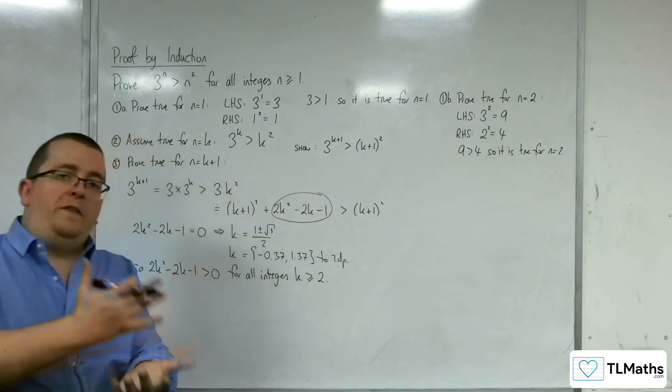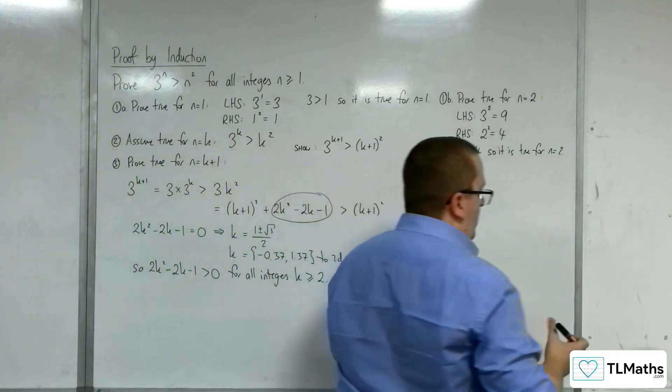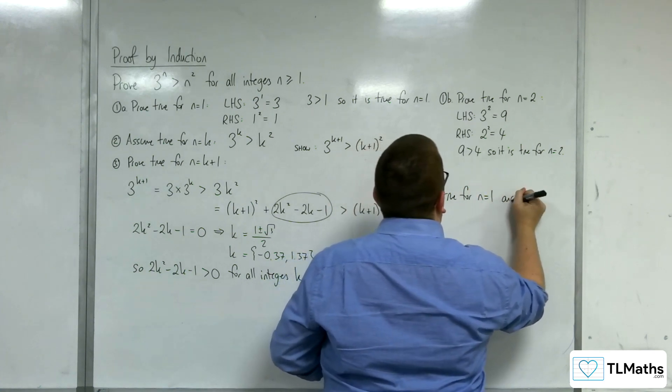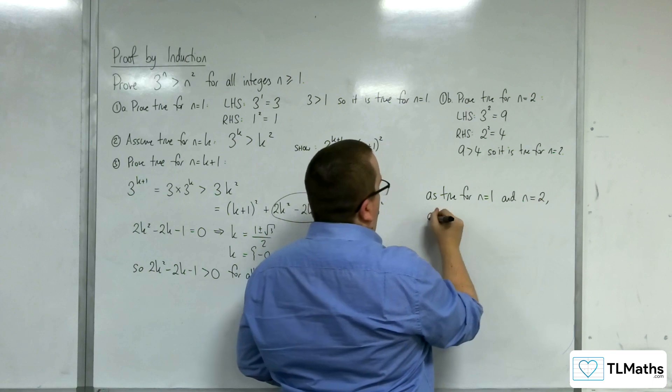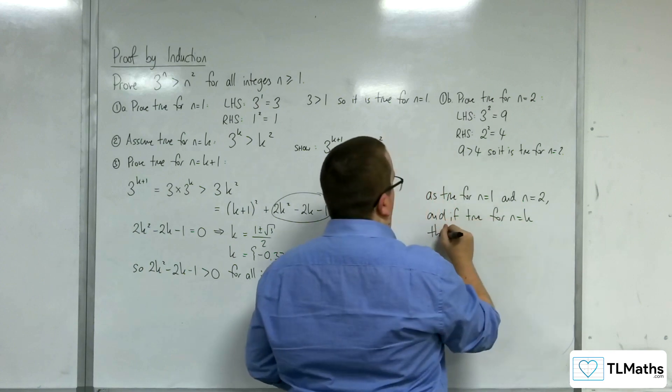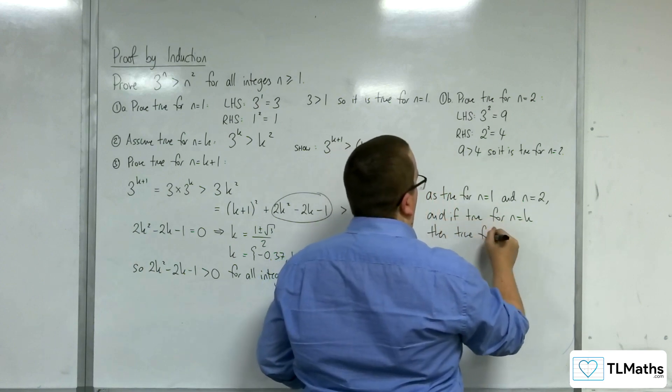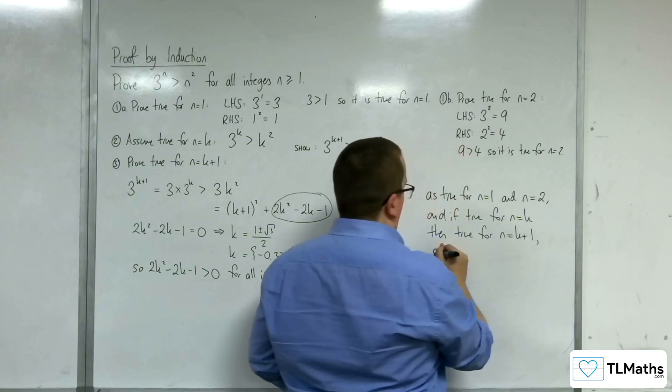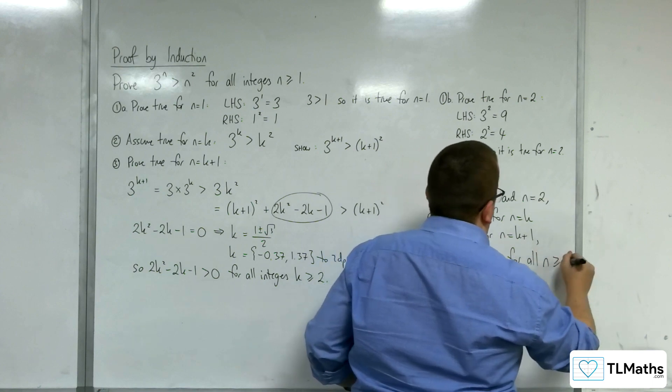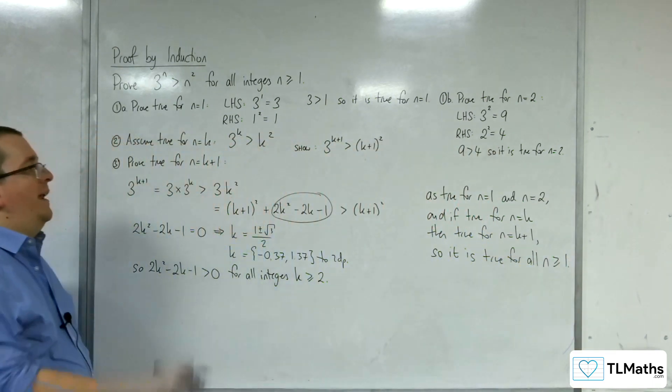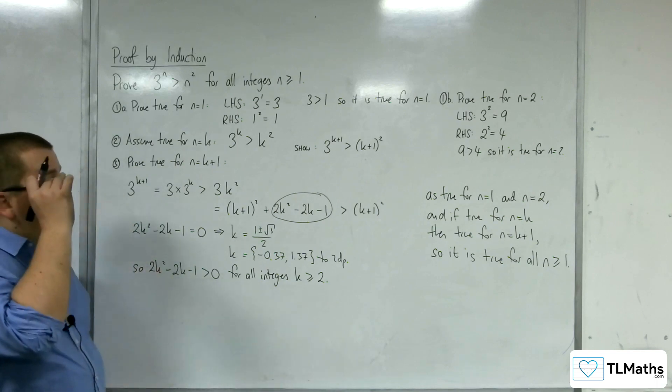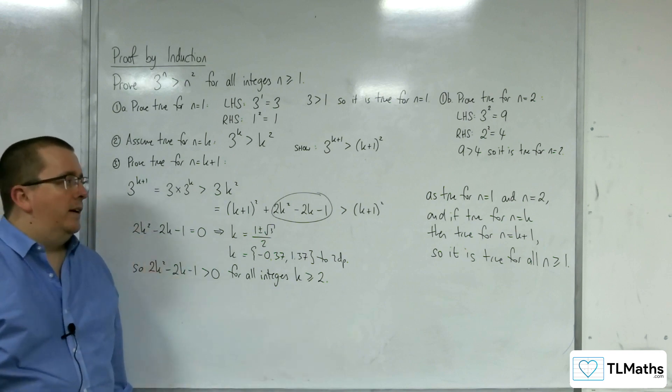And so that's where the proof is done. So as it is true for n equals 1 and n equals 2, and if true for n equals k, then we've shown it's true for n equals k plus 1. So it is true for all n greater than or equal to 1. So this one had a little bit of a bite in its tail. So we required a little bit more thinking around the problem to get to the final proof.